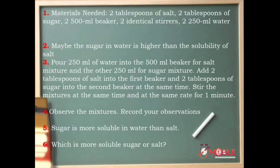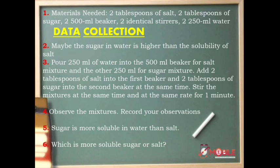Let us now check your answer in exercise two. Number one, materials needed: two tablespoons of salt, two tablespoons of sugar, two 500 ml beakers, two identical stirrers, and two 250 ml water. So since you are already given all the materials needed or you are already collecting data, then the answer would be data collection. Next, number two: maybe the sugar in water is higher than the solubility of salt. That can be a possible answer to your question, so the answer would be hypothesis.